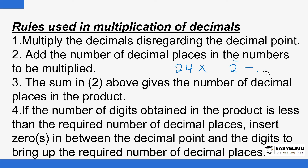So that's the first step — you disregard the decimal point and then multiply the number. Then after that, you add the decimal places in the numbers to be multiplied. For example, 0.24 multiplied by 0.2.